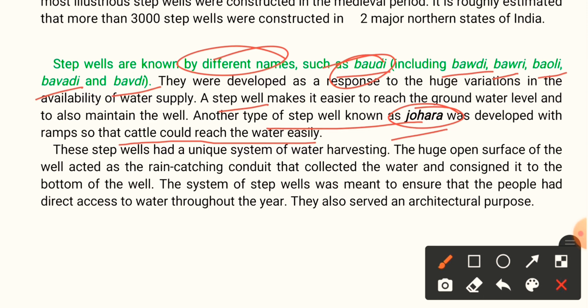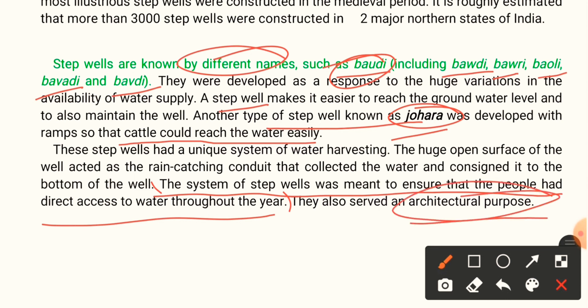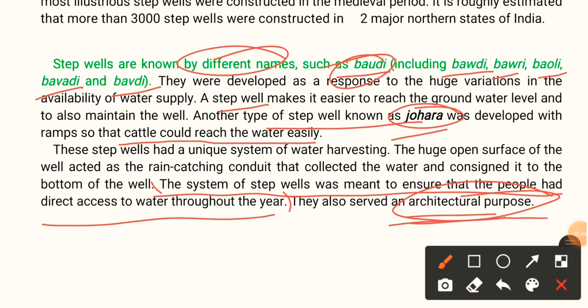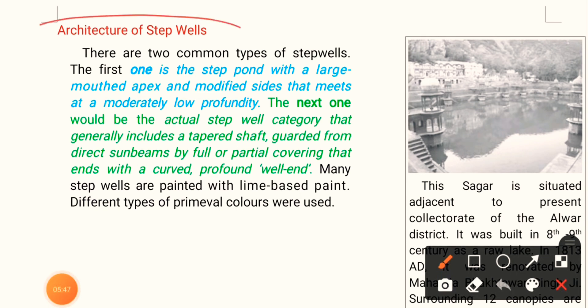These step wells had a unique system of water harvesting. The huge open surface of the well acted as a rain-catching conduit to collect water and consign it to the bottom of the well. The system of step wells was meant to ensure that people had direct access to water throughout the year. They also served an architectural purpose — in fact, the design of Indian step wells has inspired a shopping mall in the United States.